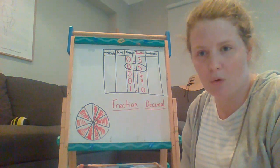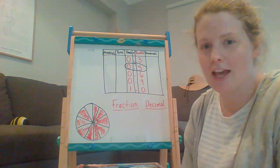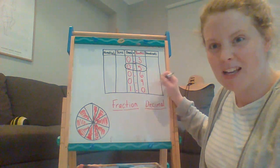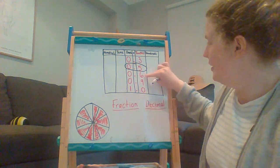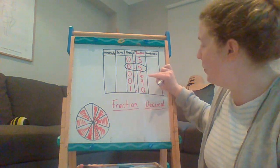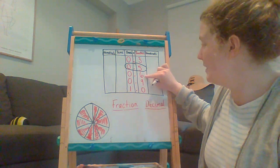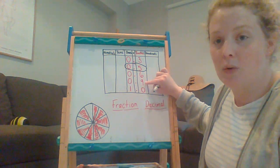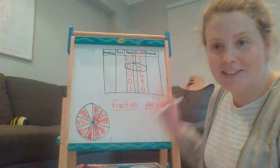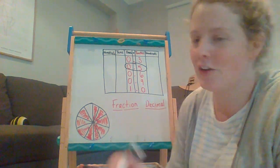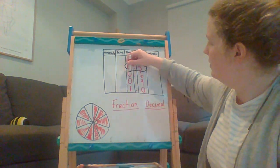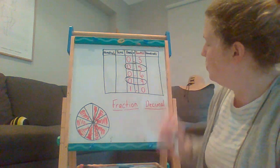I've eaten more of that pie, so that means that that number is a bigger number. 0 and 6 tenths would mean that it's smaller than 0 and 9 tenths. So this number would be bigger.